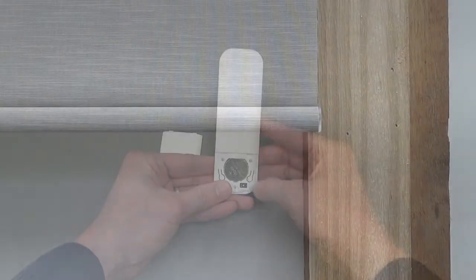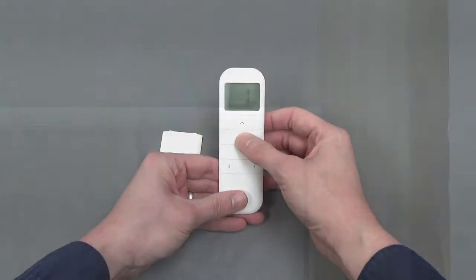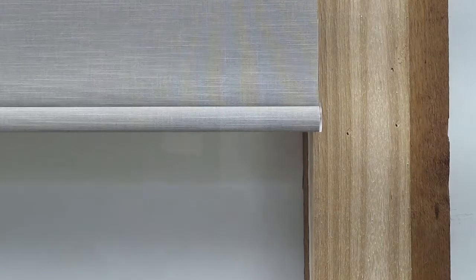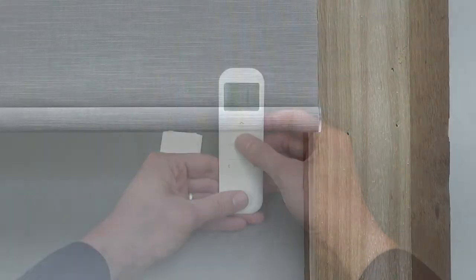Press the button and the shade will jog and beep one time. Then, turn the remote back over and press the stop button. The shade will jog and beep again. Press the stop button again and the shade will jog twice and beep three times. This confirms that the favorite position has been saved.